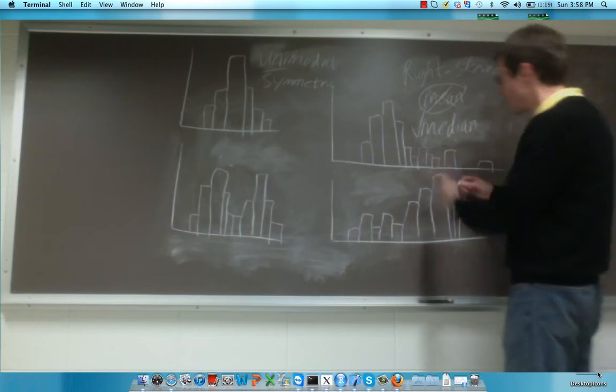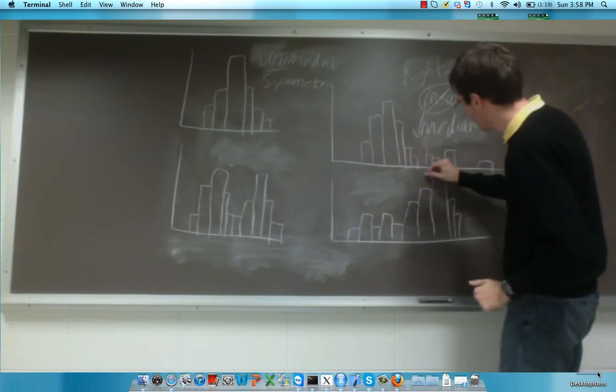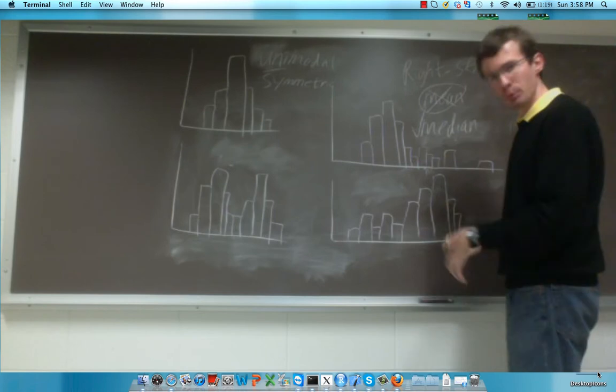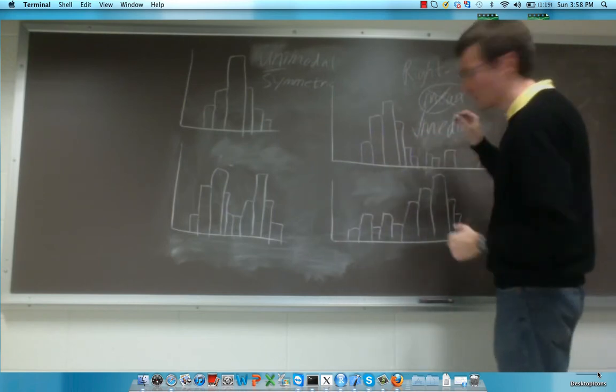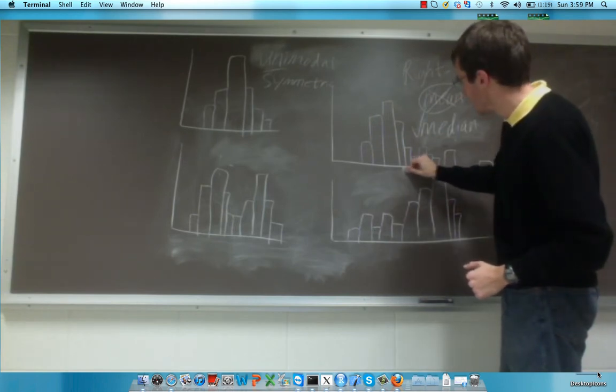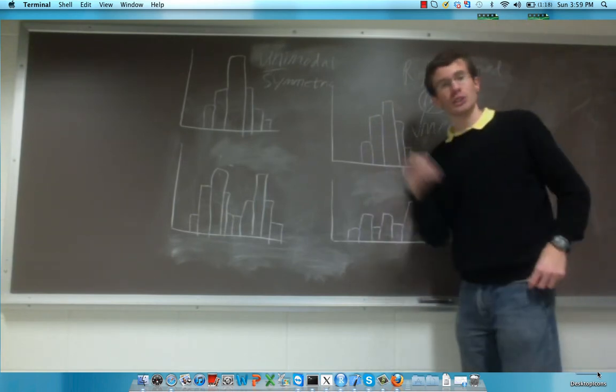So in this case, the mean would be drawn more towards these outliers and would be about right there, because again, it's balancing the mass of this distribution. But the median would be relatively uninfluenced and would still be closer to the center of the actual distribution.